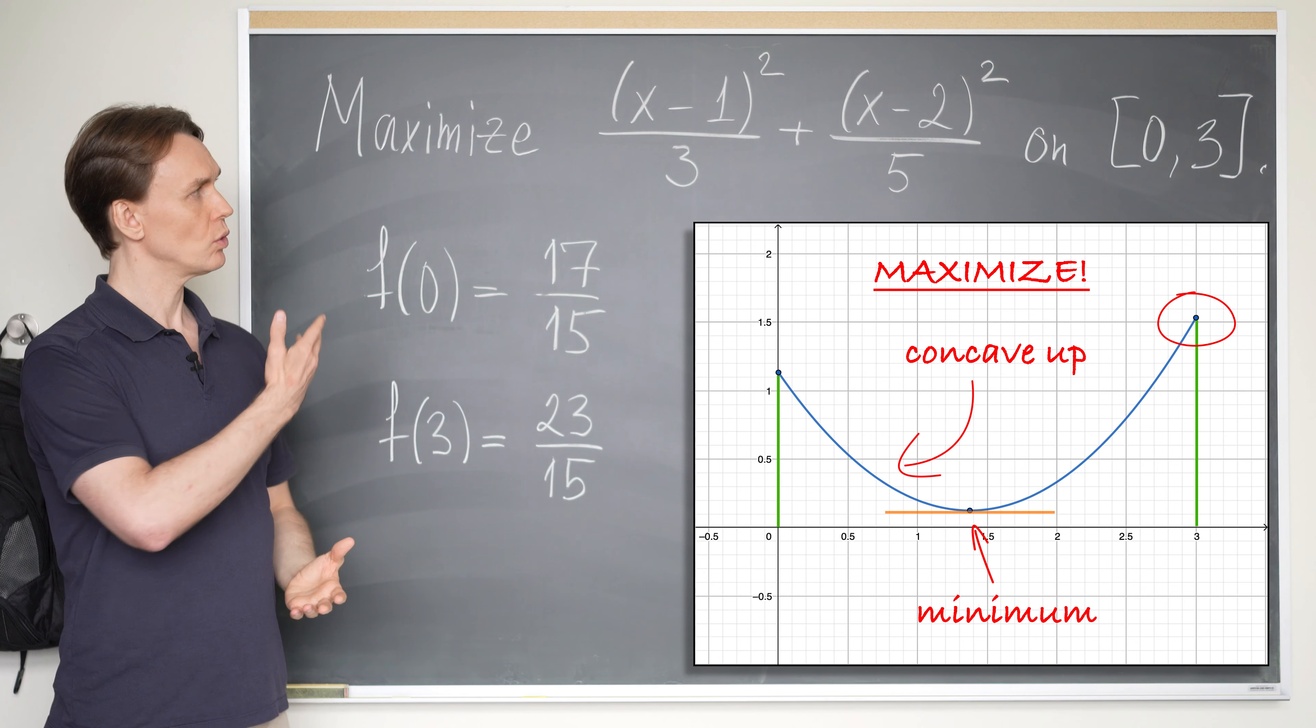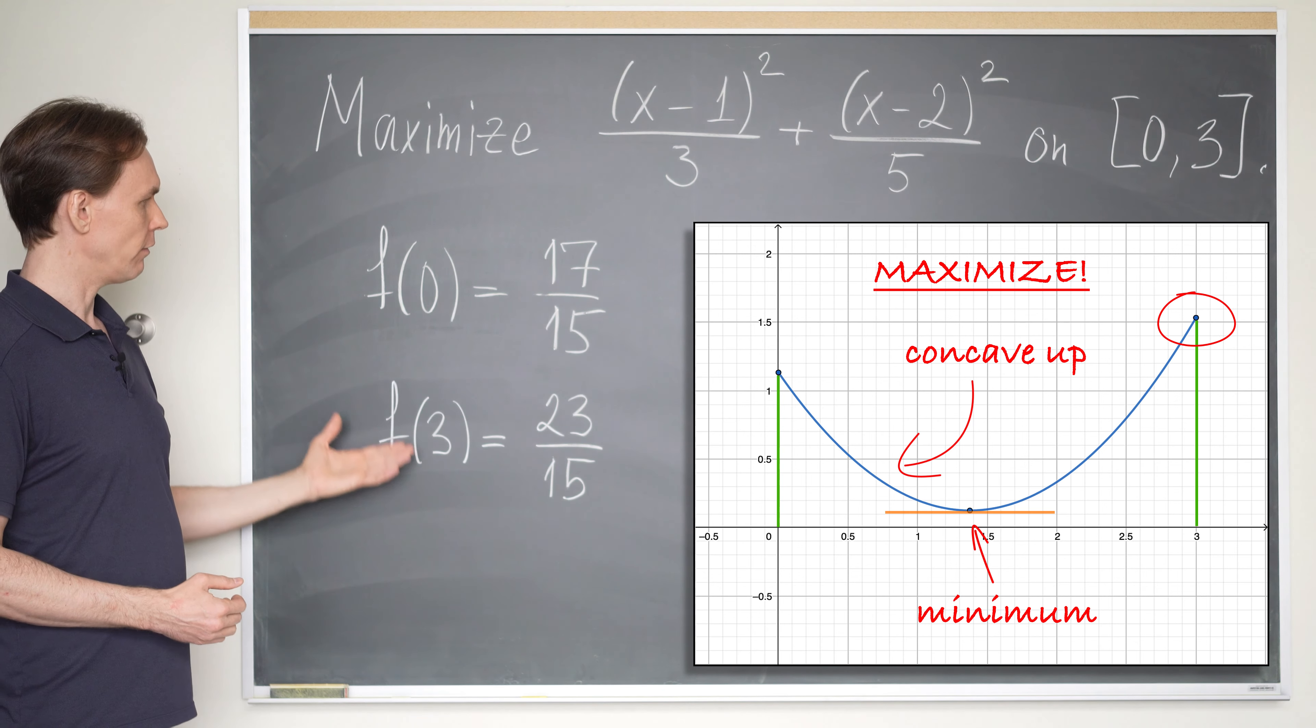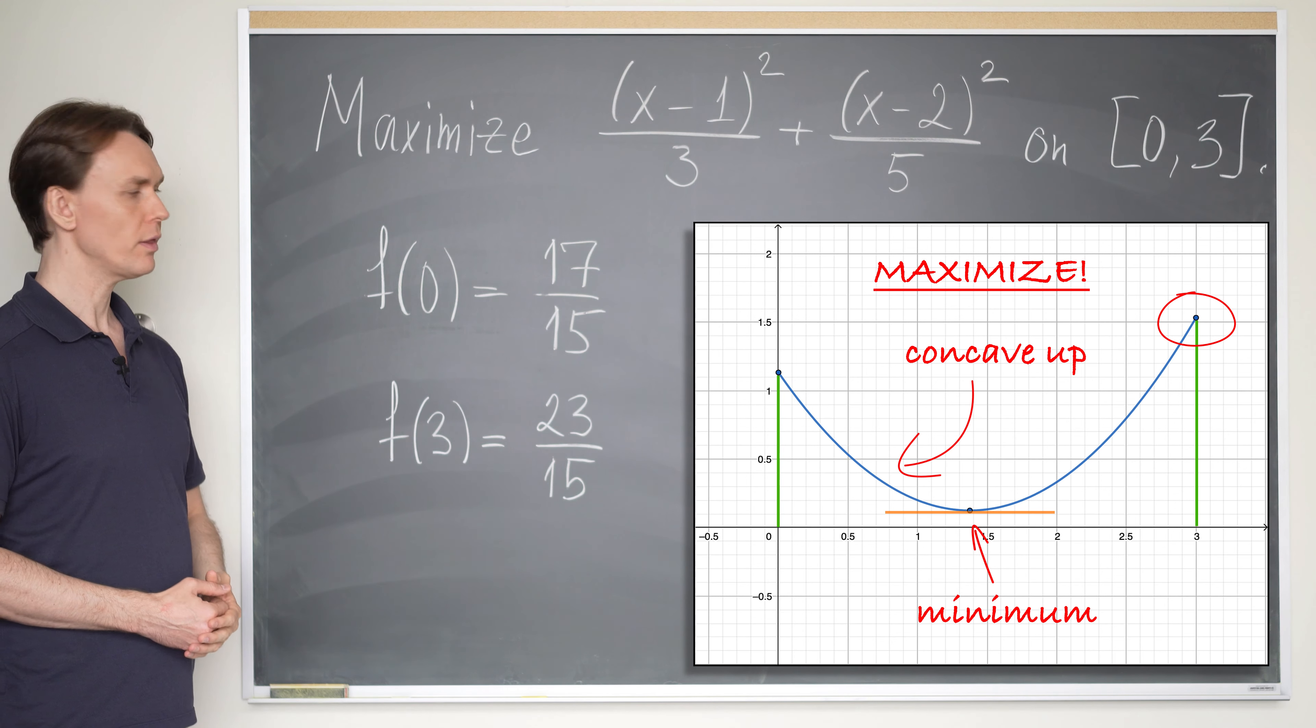So we don't need to compute derivatives here. And if we just compare the values of this function at 0 and 3, we can see that the maximum will be 23 divided by 15 when x is equal to 3.